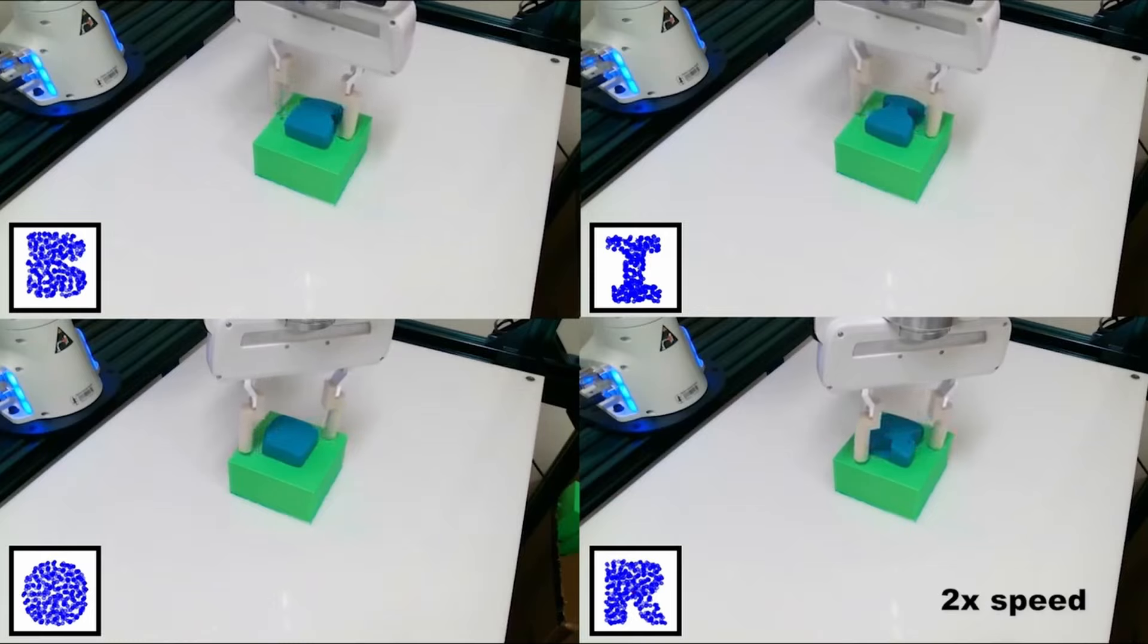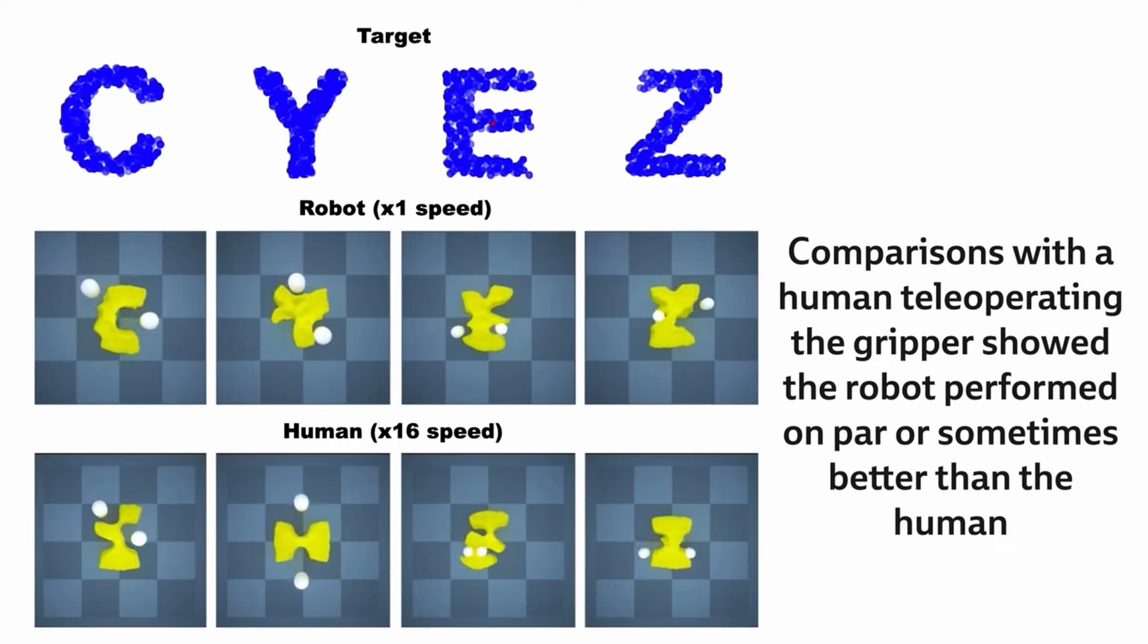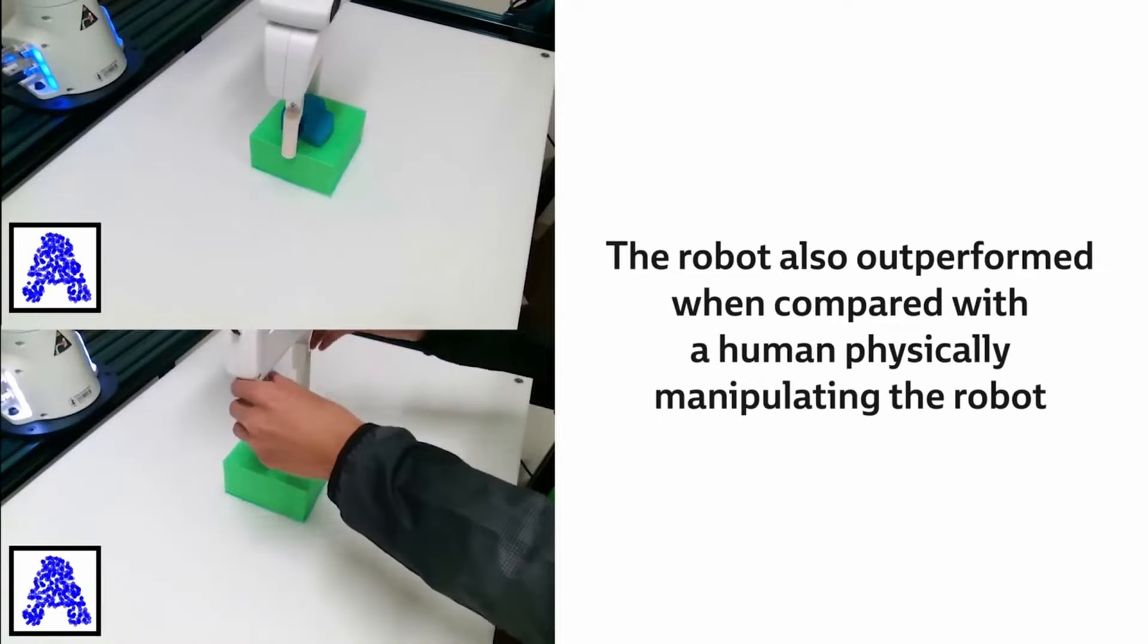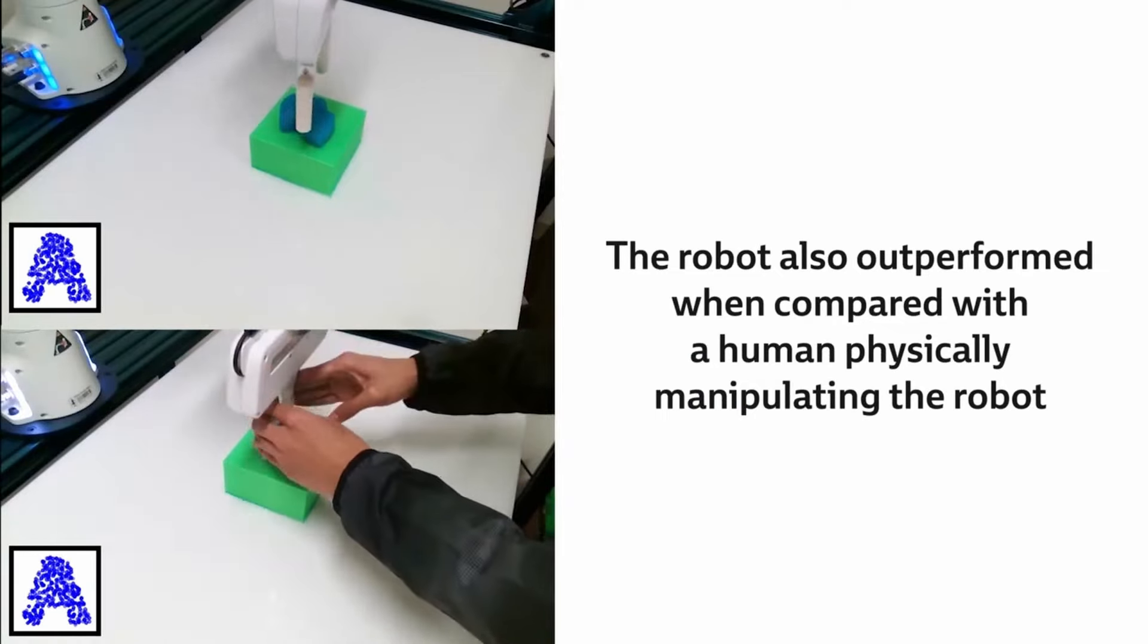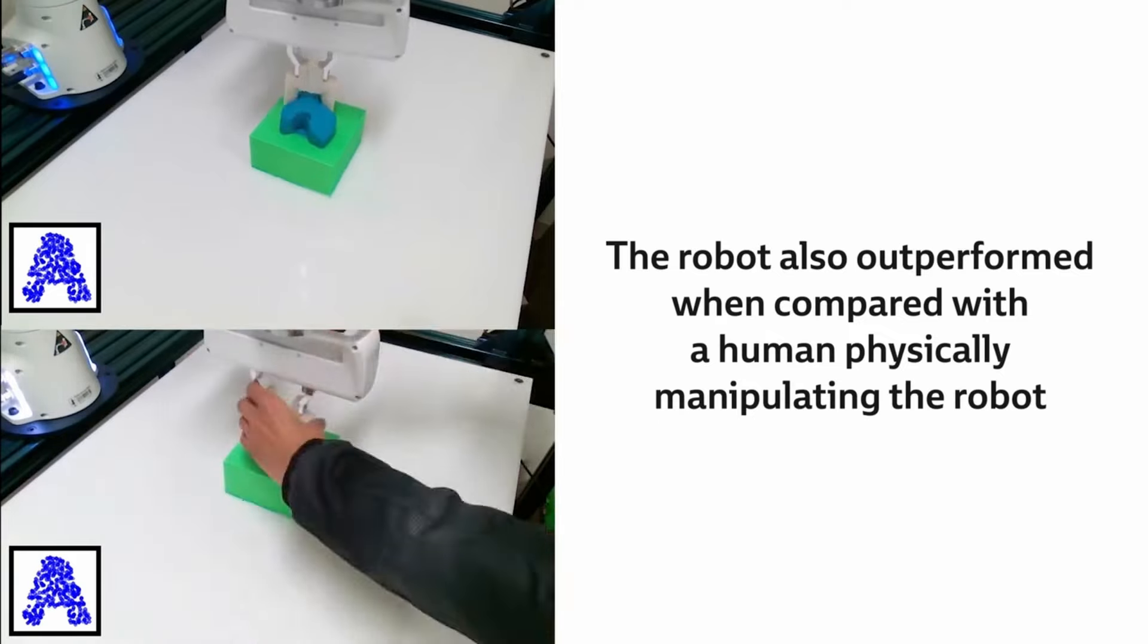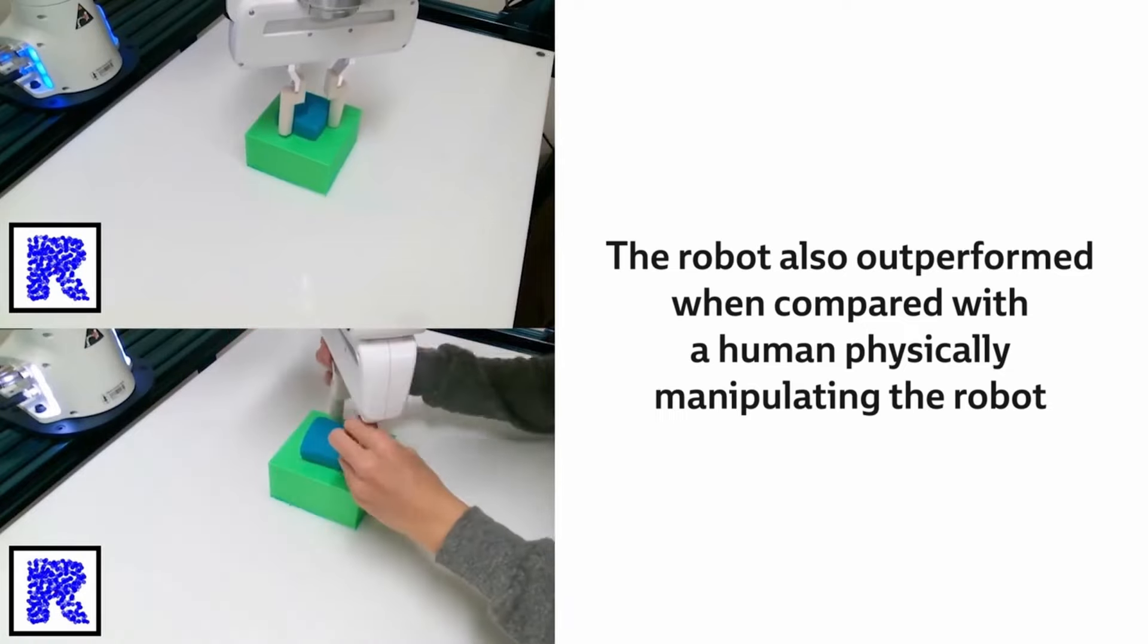With RoboCraft, they learned the dynamics models directly from high-dimensional sensory data, which offers a promising data-driven avenue for them to perform effective planning. By turning the images into graphs of little particles, coupled with algorithms, RoboCraft used a graph neural network as the dynamics model and made more accurate predictions about the material's changes and shapes. Typically, researchers have used complex physics simulators to model and understand force and dynamics being applied to objects, but RoboCraft simply uses visual data.